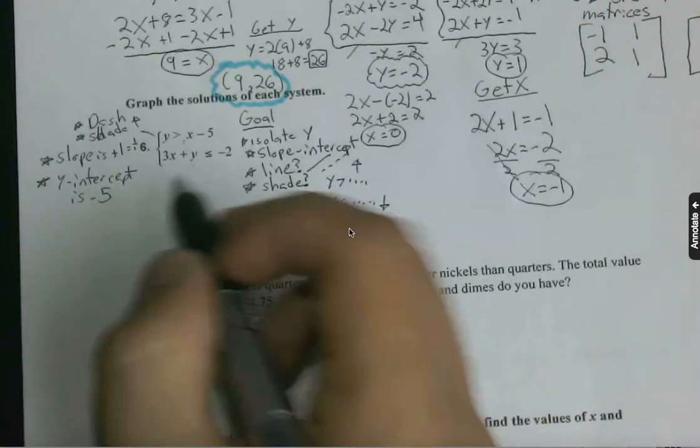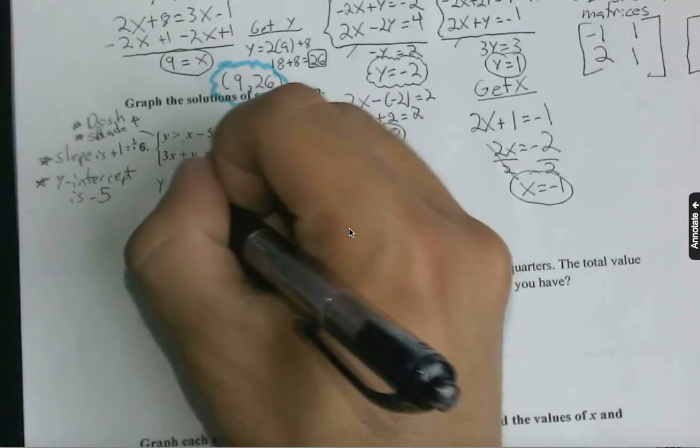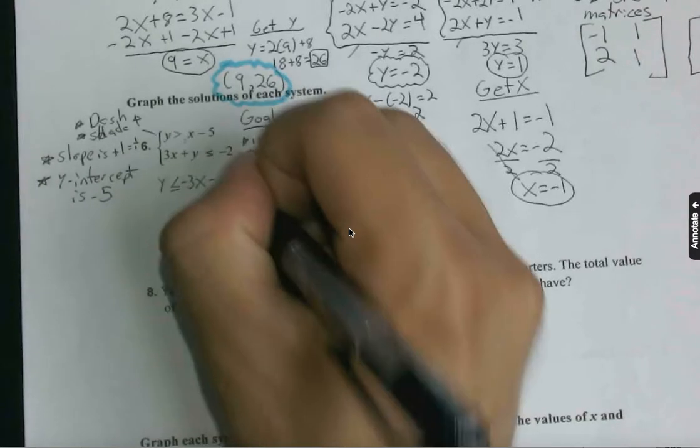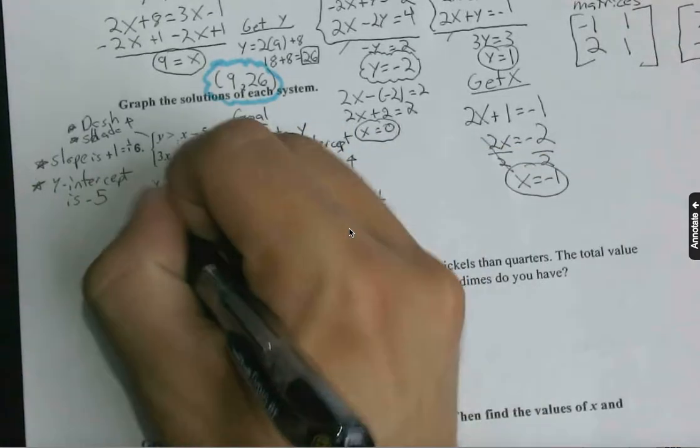Well, if we move 3x to the other side, we have y values less than or equal to negative 3x minus 2. From here we should be able to say a lot about this.